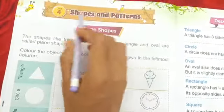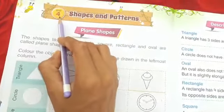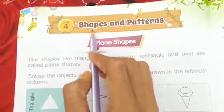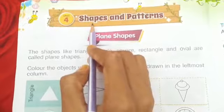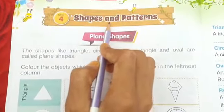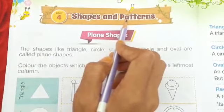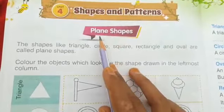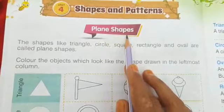Shapes and patterns, unit 4. What do shapes mean? They are forms. What are plane shapes? Plane shapes are flat shapes.